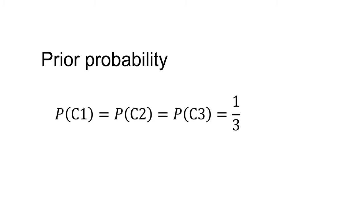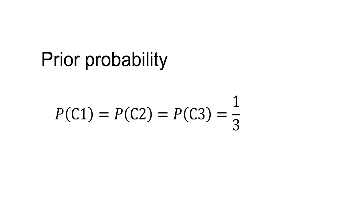Each element is as follows: P(C1), P(C2), and P(C3) — the prior probability of the car being behind each door — is 1/3. P(D3|C1) is the probability the host opens door three given the car is behind door one; the host could open either door two or door three, so the probability is 1/2. P(D3|C2) is 1 — the host must open door three as they cannot open your door or the car's door. P(D3|C3) is 0 — the host cannot open a door to reveal the car.